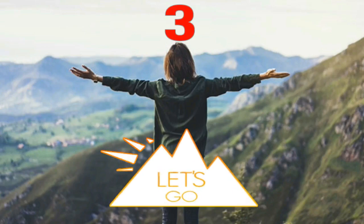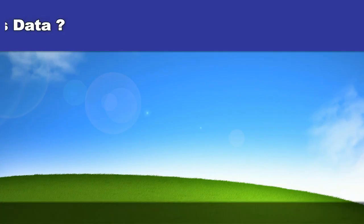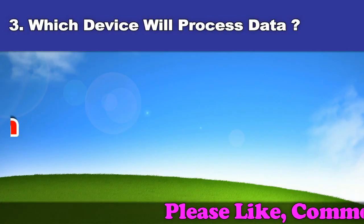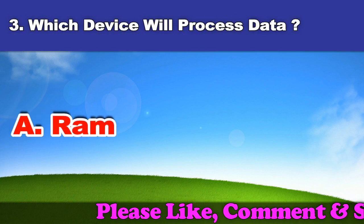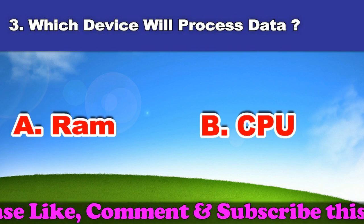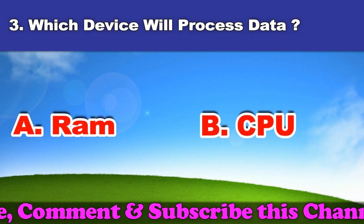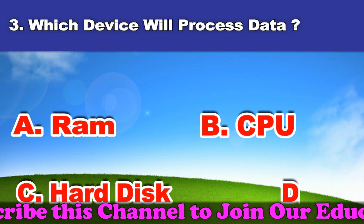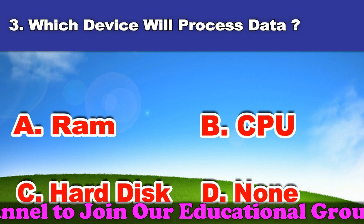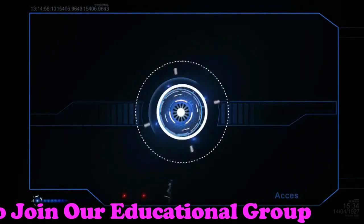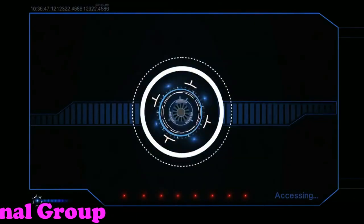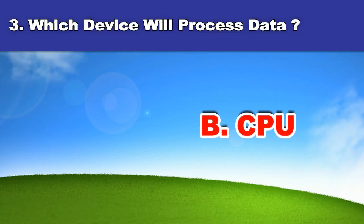Third question: Which device will process data? A. RAM. B. CPU. C. Hard disk. D. None. And the answer is CPU.